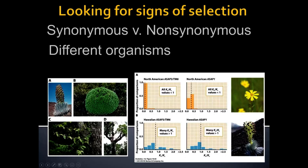If a protein is evolving neutrally, we're not going to see a strong difference between synonymous and non-synonymous mutations. If we normalize them — putting them on equal footing for how many can occur in a certain stretch of DNA — then we'd expect to see roughly 50% non-synonymous and 50% synonymous. But that's usually not the case for proteins, which usually fall under one of two categories. One of these categories is purifying selection.